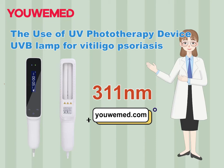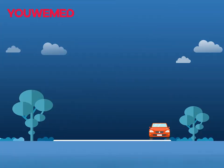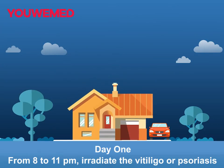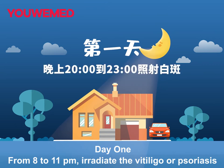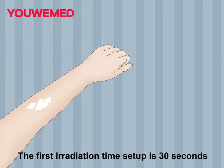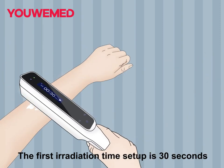The use of UV phototherapy device — UVD lamp — for vitiligo or psoriasis. Day 1, from 8 to 11 pm, irradiate the vitiligo or psoriasis area. The first radiation time setup is 30 seconds.